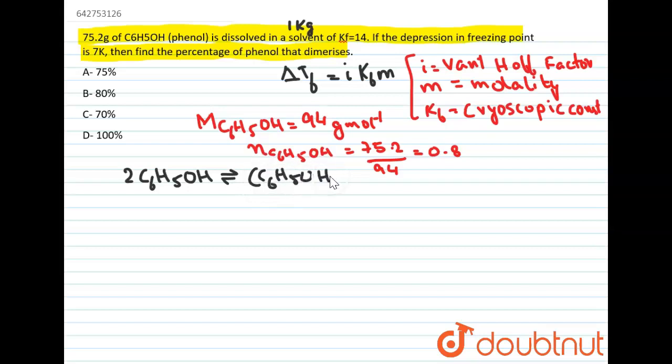Now we'll assume that initial number of moles of phenol is n. Let alpha be the degree of association. So n alpha amount will be associated, so left over will be n minus n alpha.